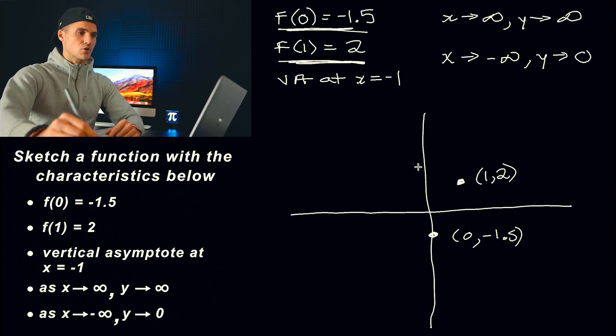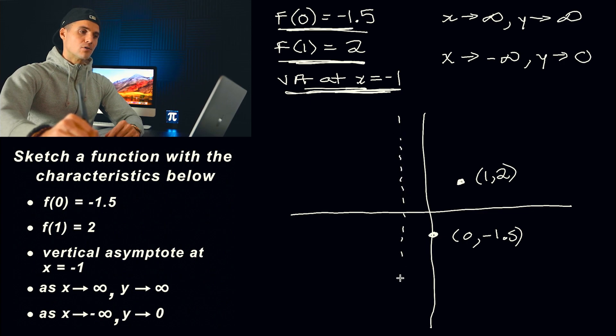So those are actual concrete characteristics on the graph. Next characteristic is concrete as well. We're told that there's a vertical asymptote at x = -1. So we know that at this x value of negative 1, there's going to be a vertical asymptote. I'm just going to draw a dotted line there to represent that.